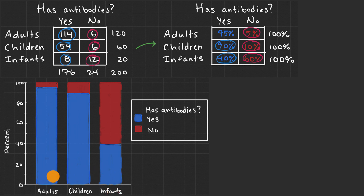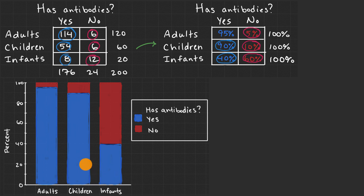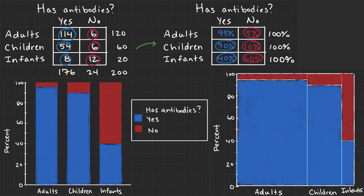There is some information lost in this segmented bar chart. For example, we've lost the fact that we sampled a lot more adults than children and far more children than infants. So one way to incorporate that data back into a visualization — to show how many people were sampled in each category — we can generate what's known as a mosaic plot.